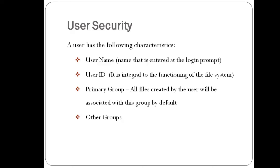User security has the following characteristics. A user has a username which they enter at the login prompt, and they will be given a user ID. This is integral to the functioning of the file system. There are two types of groups: the primary group and the secondary group. All files created by the user will be associated with the primary group by default, and all others can be called other groups.